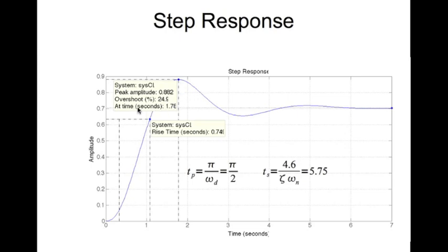Looking at the step response of the closed loop feedback system: the peak time is at 1.78 seconds. The desired peak time was pi/2, which is approximately 1.57 seconds — the small difference is due to eyeballing on the graph. The settling time is approximately 5.6 seconds, which is very close to the desired 5.75 seconds, verified using 1% error band lines. Therefore, the PD design is complete.